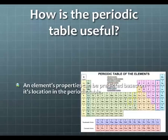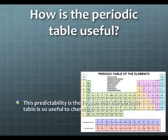An element's properties can be predicted based on its location in the periodic table. All of the elements that are found in certain columns have the same reactivity, or have the same properties, as elements that are found under or above it. So it creates a predictability. The predictability is the reason that the periodic table is so useful to chemists.